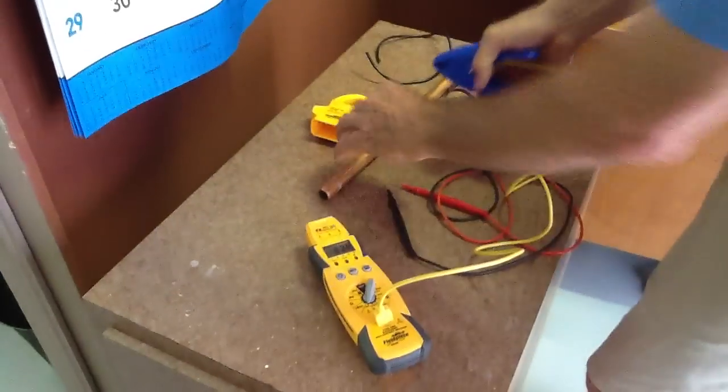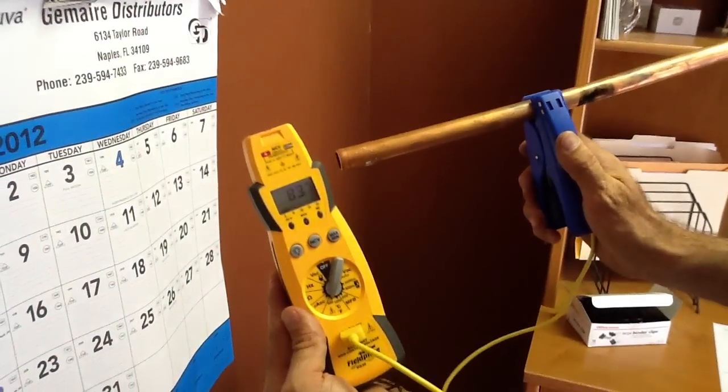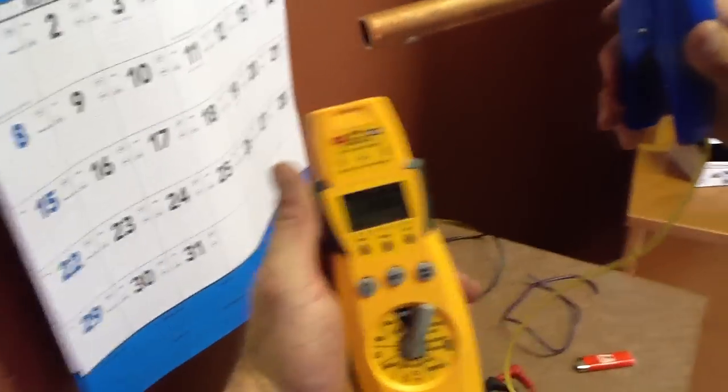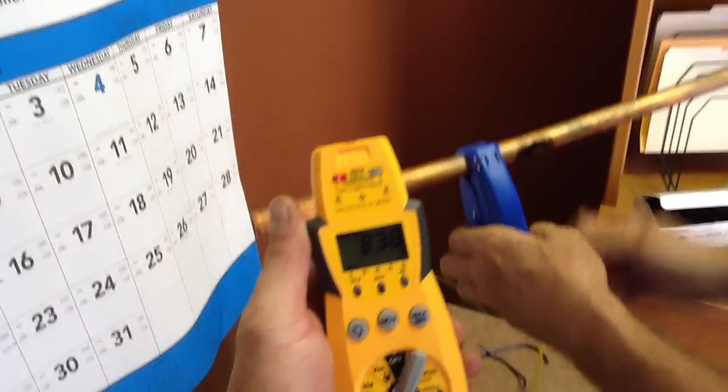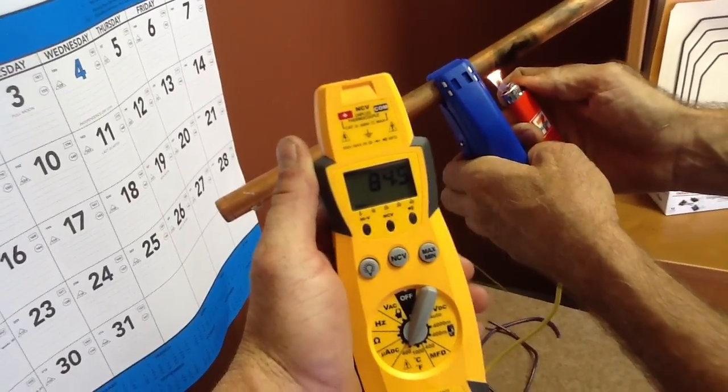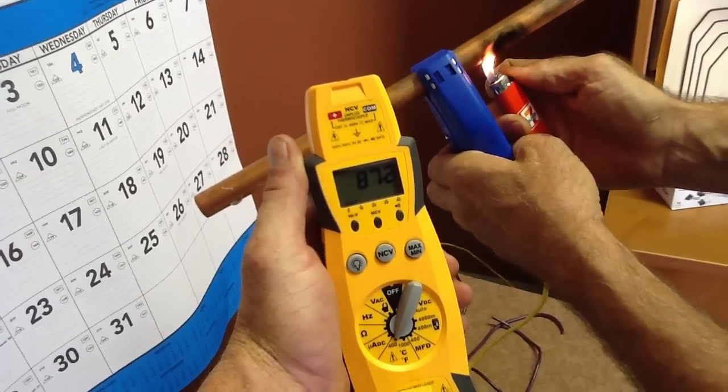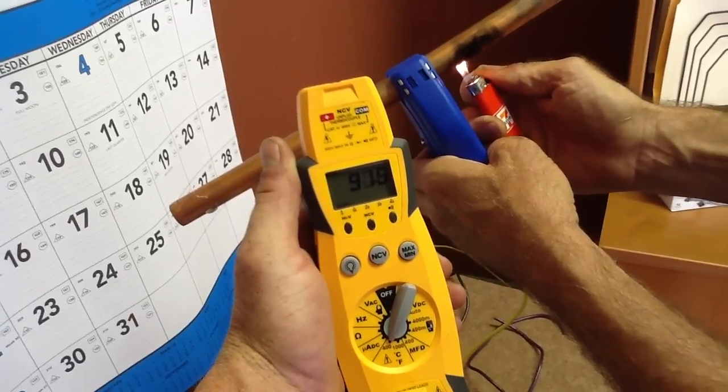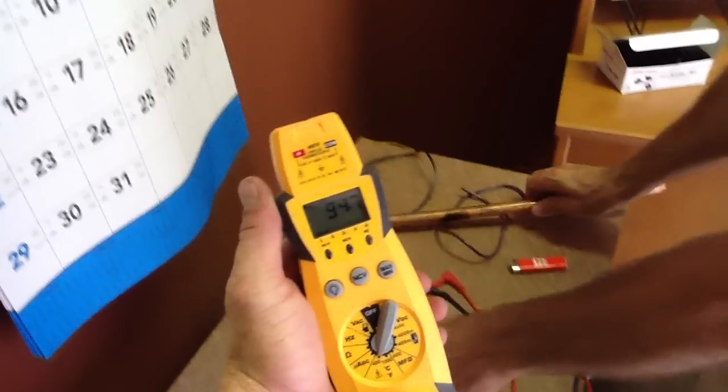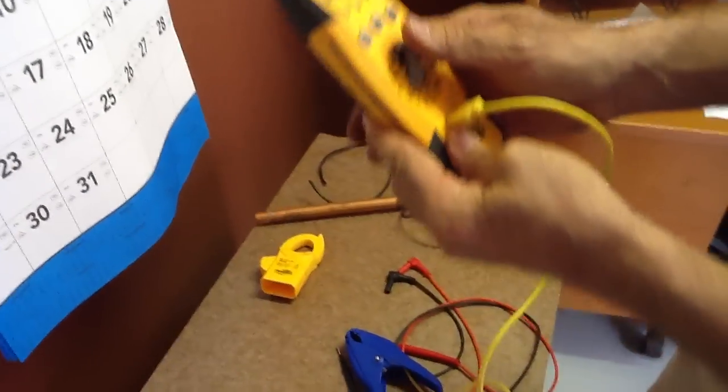This is what you normally clamp on your suction line when you're doing superheat, subcool. Right now we have 83.7 degrees. So now what I'm going to do is I'm going to actually put a lighter on this here. You can see how quick this thing will light up. This thing is very sensitive, very accurate, works fantastic.